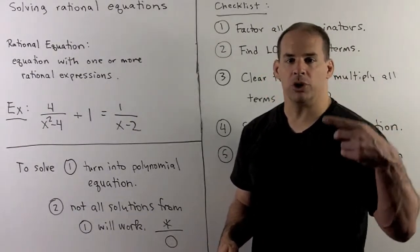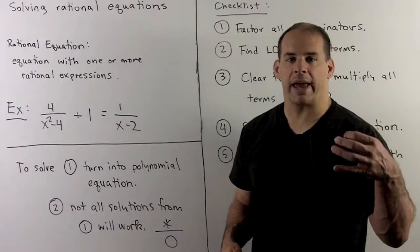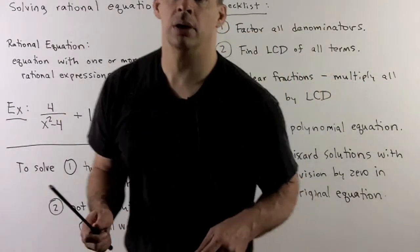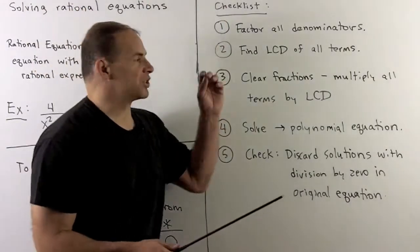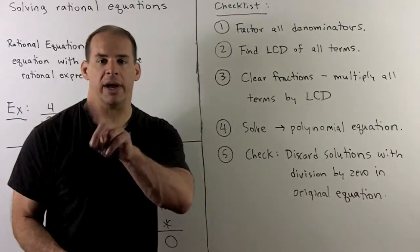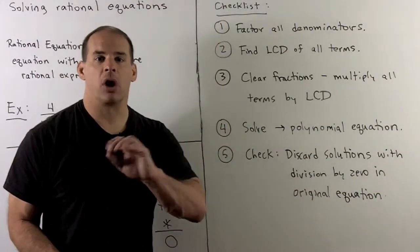Now, we go through a checklist, and then we work out some examples. Our first step, we go through our equation term by term and factor all the denominators.